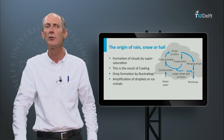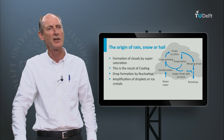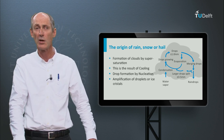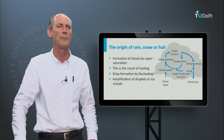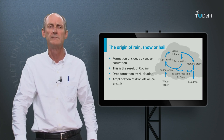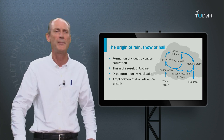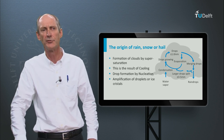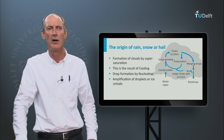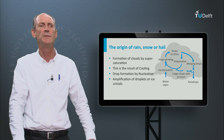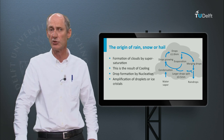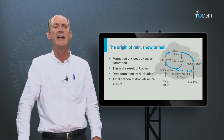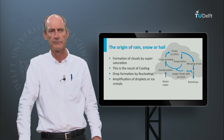Condensation requires little crystals or dust particles for nucleation. Turbulence causes the droplets to grow, as drops move up and down and collide with other droplets, until they are too heavy to be sustained by turbulence or the uplift of the air and they drop to the ground.